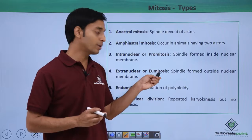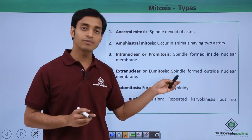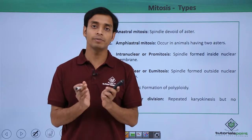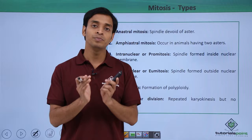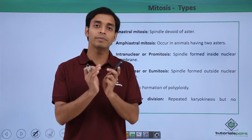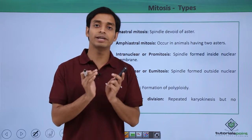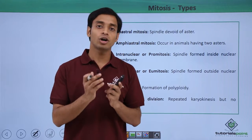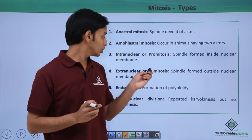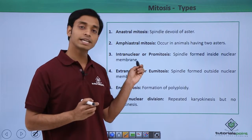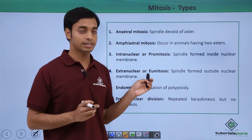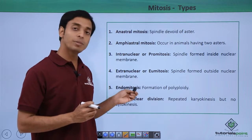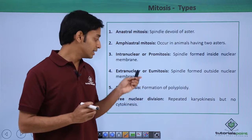The fourth type of mitosis is known as extranuclear or eumitosis. Here the spindle formation occurs outside the nuclear membrane because the nuclear membrane does not remain intact and is dissolved into the cytoplasm. This is known as eumitosis.